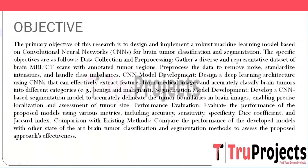The primary objective of this project is to create a robust machine learning model based on CNN features, specifically for brain tumor classification and segmentation. To achieve this aim, a diverse and representative dataset of brain MRI scans with annotated tumor regions will be collected and processed. Data pre-processing will involve noise removal, intensity standardization, and handling class imbalance.